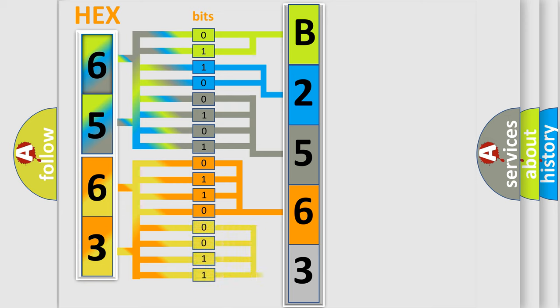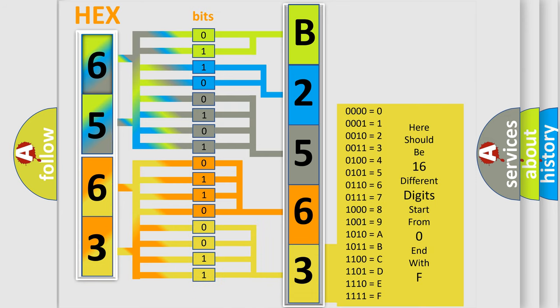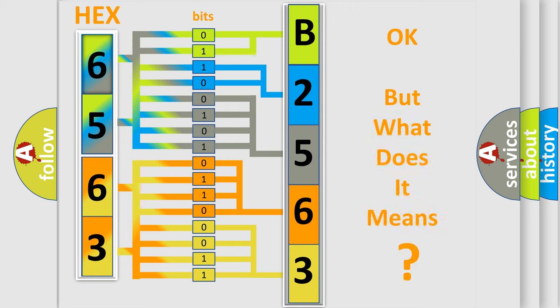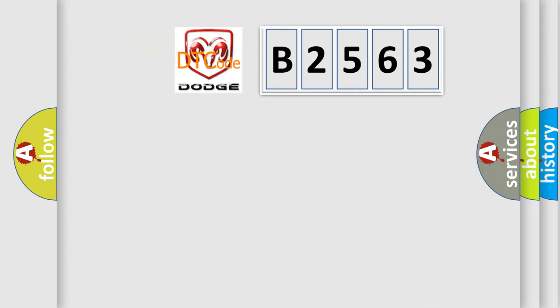A single byte conceals 256 possible combinations. We now know in what way the diagnostic tool translates the received information into a more comprehensible format. The number itself does not make sense to us if we cannot assign information about what it actually expresses.